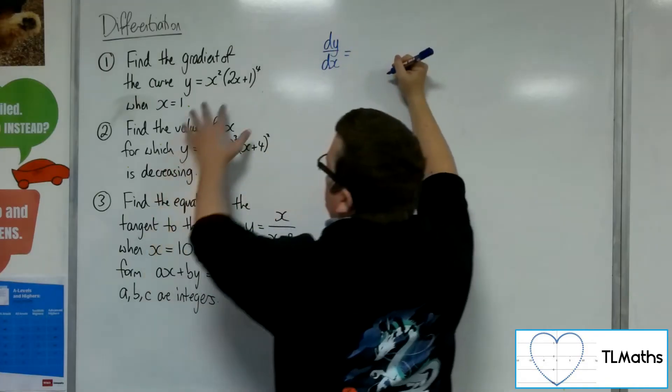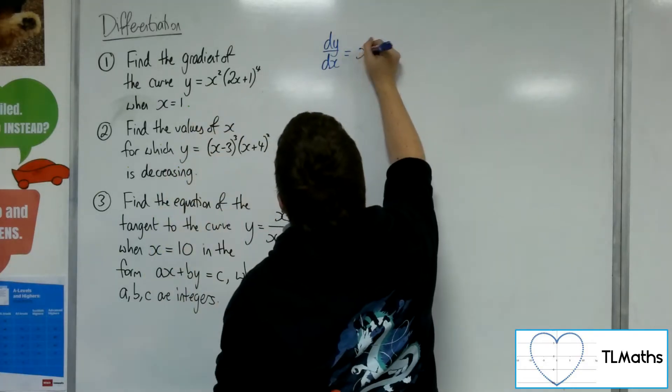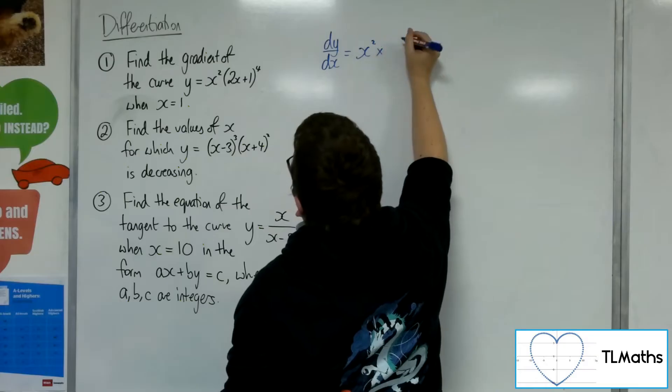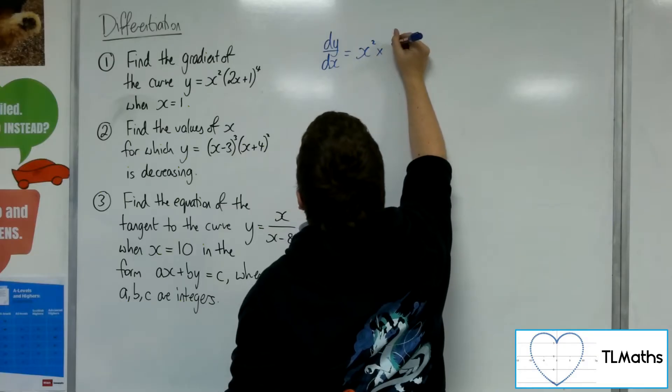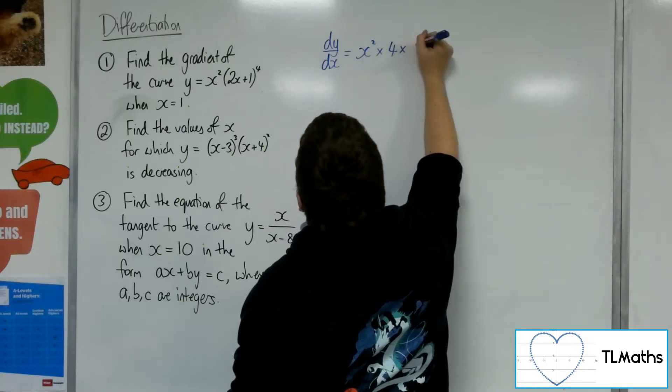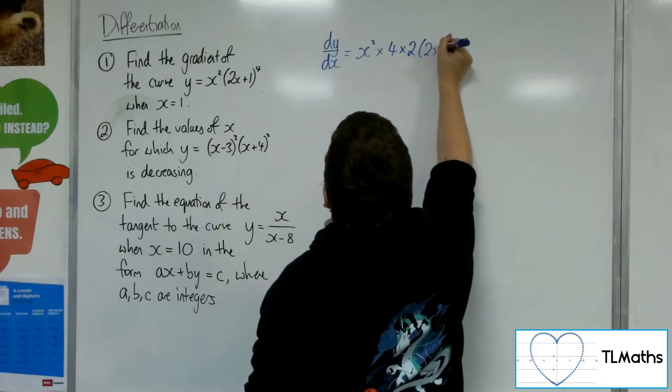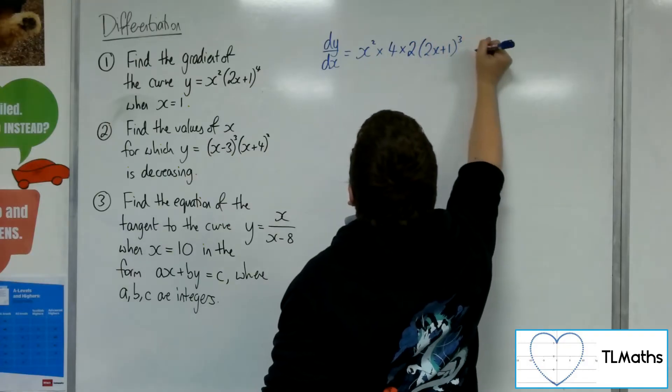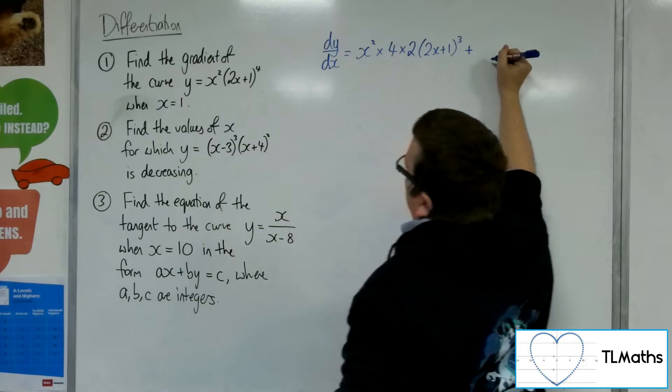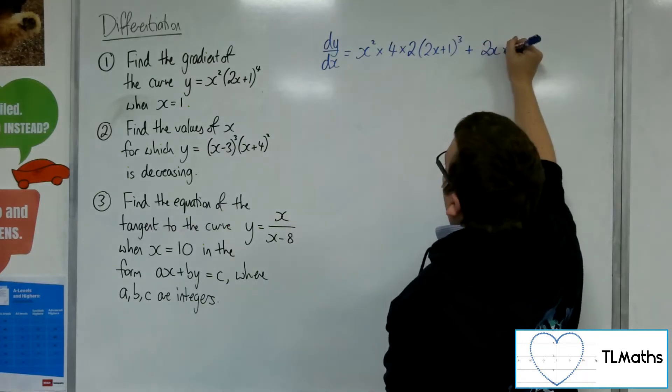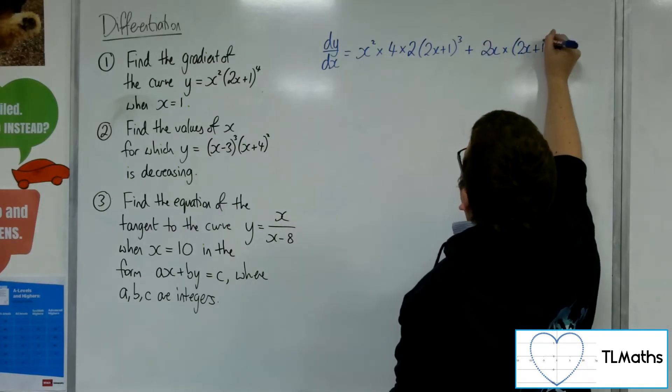So here we're going to use the product rule. So we've got x squared times the derivative of 2x plus 1 to the 4, so the 4 comes down, the 2 comes out, and we take 1 from the power, plus the second times the derivative of the first,